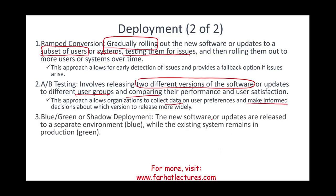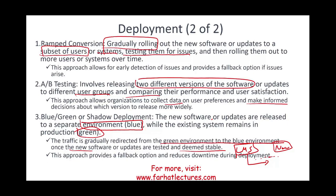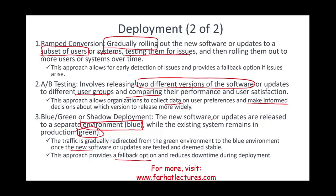There's also blue-green shadow deployment, where new software is released to a separate environment (blue) while the existing system remains in green. You gradually redirect users from the green environment to the blue environment once the new software is tested and deemed stable. For example, you wouldn't move all students from an old learning management system to a new one at once — you migrate them gradually. This provides a fallback option and reduces downtime. In total there are four deployment methods, with big bang being the riskiest.